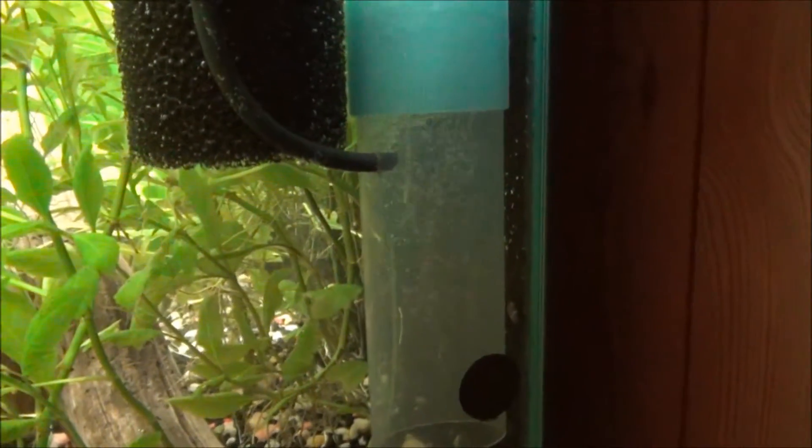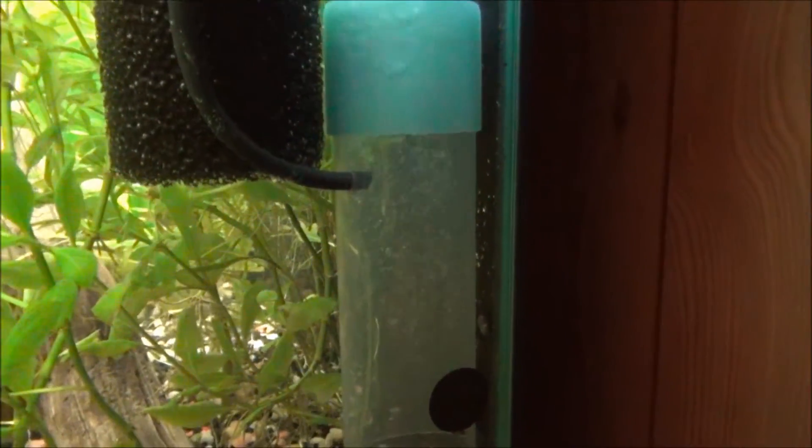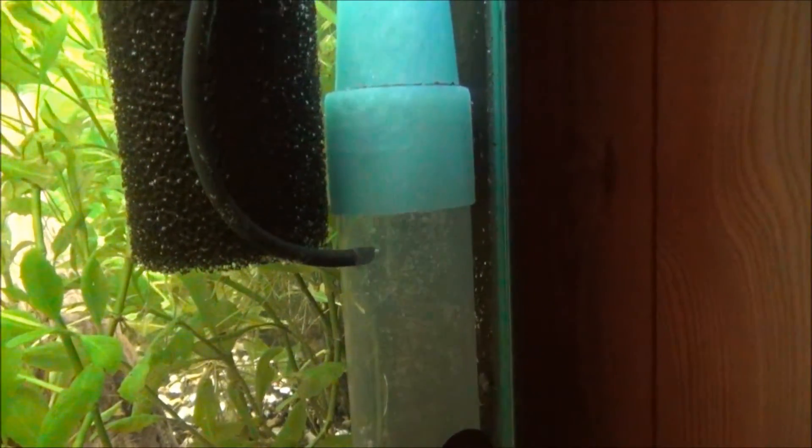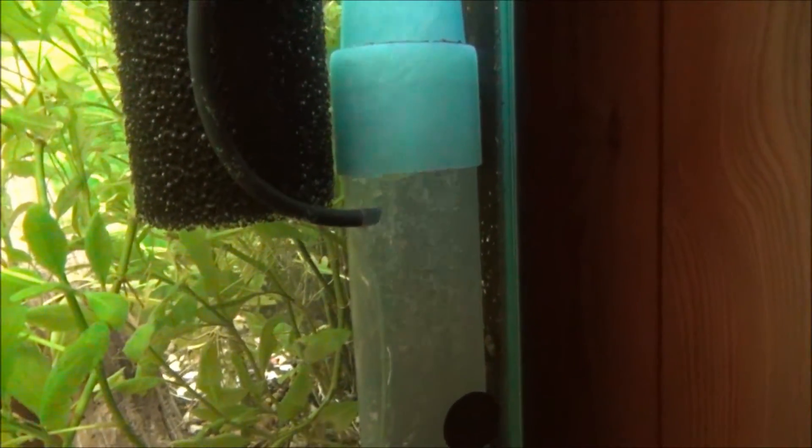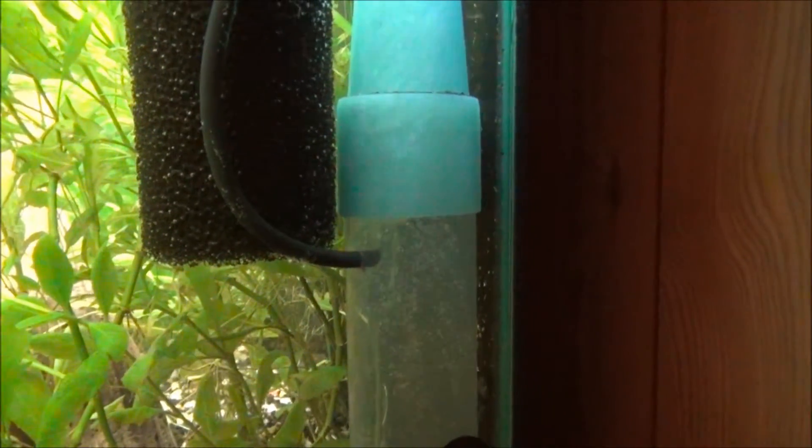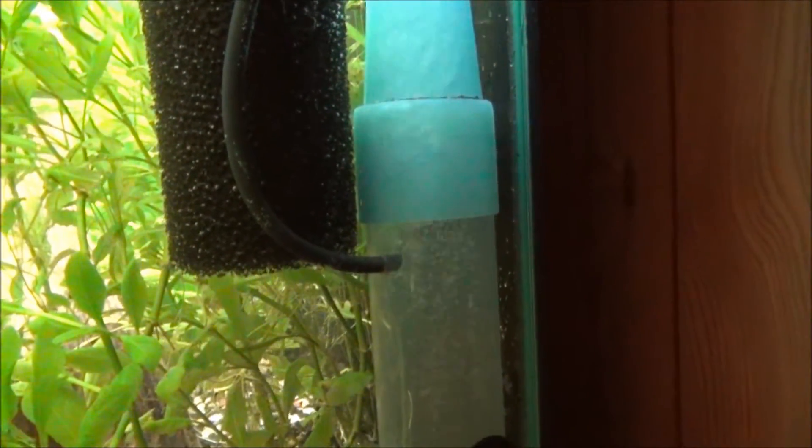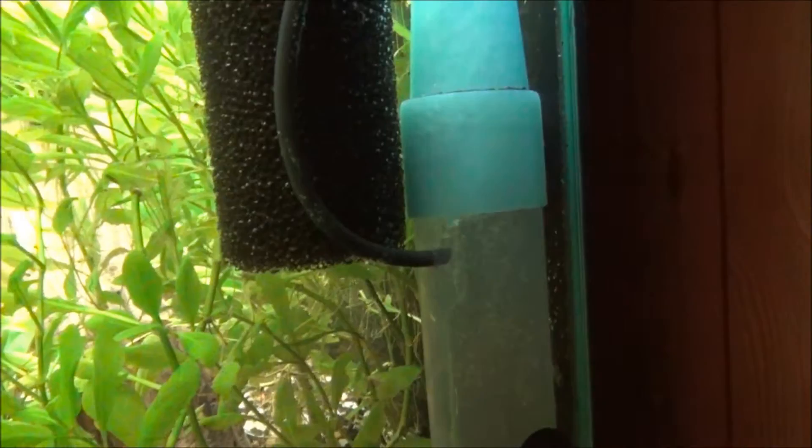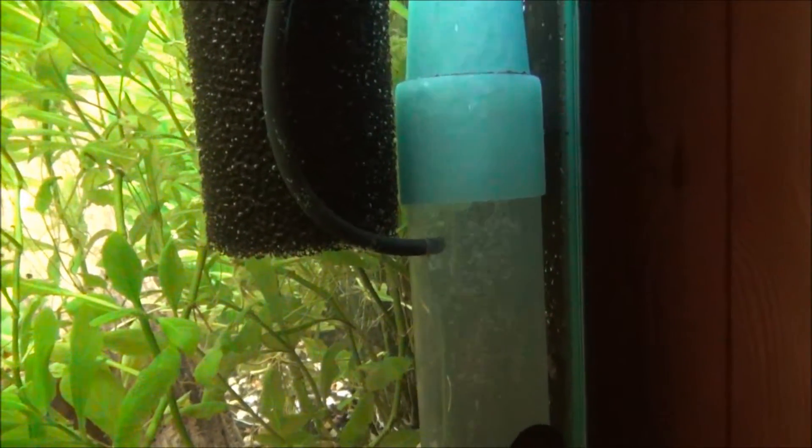One little note: the less yeast to sugar you use, the longer the yeast will survive. If you have more yeast to sugar in there, they eat up all the sugar and can't survive. So if you have less yeast to sugar, they have enough to eat and survive while they're making CO2.